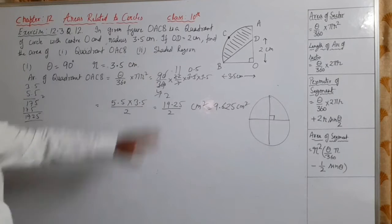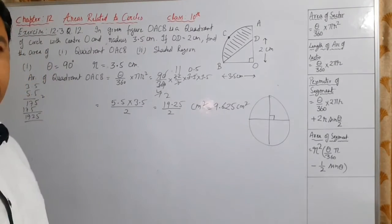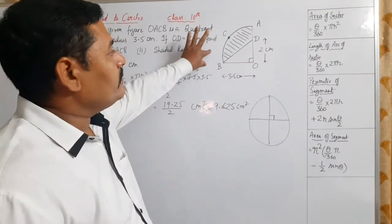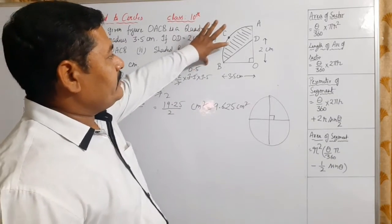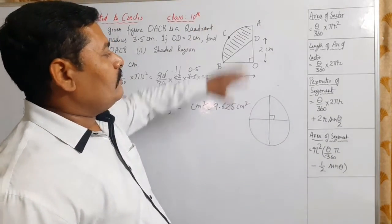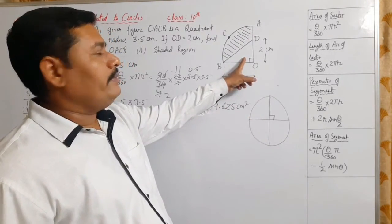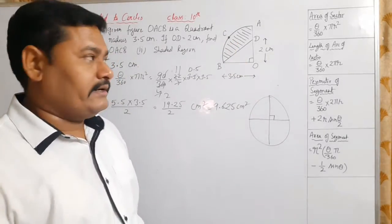Now the second portion is: find the area of shaded region. In order to find the area of shaded region, we have to observe the figure closely. The shaded region is area of quadrant minus the area of triangle O, B, D.